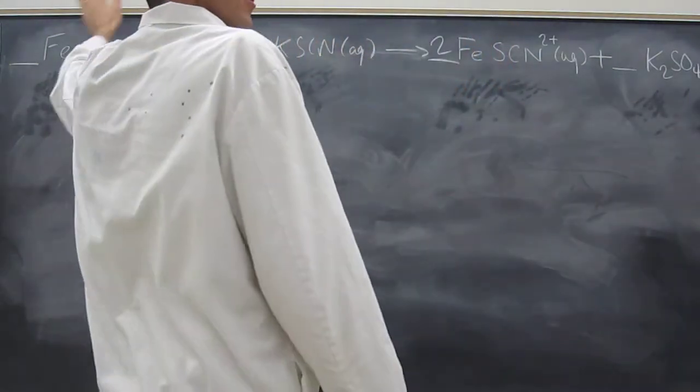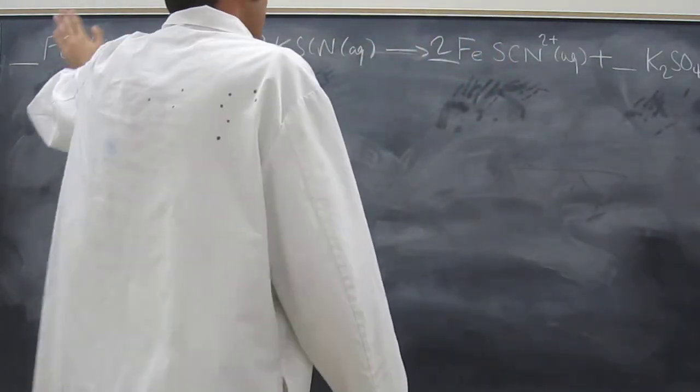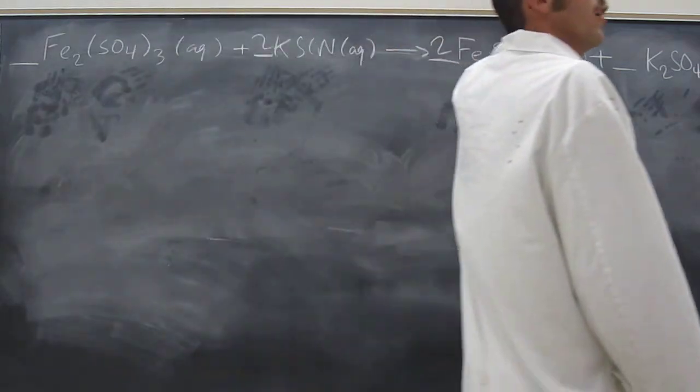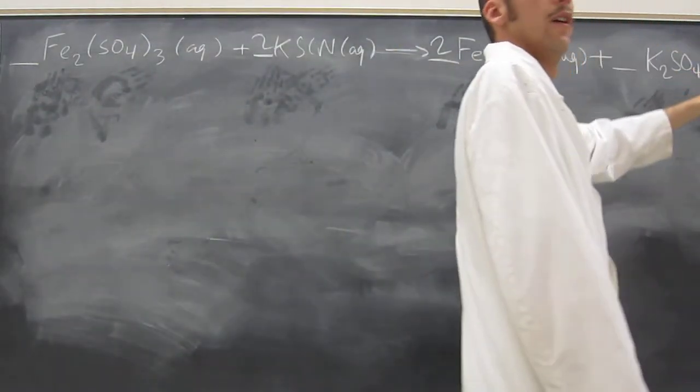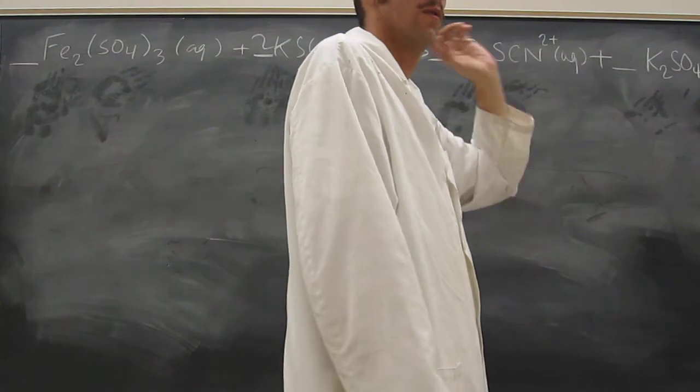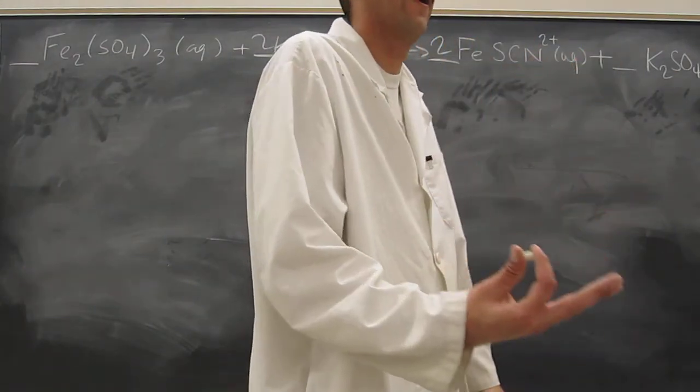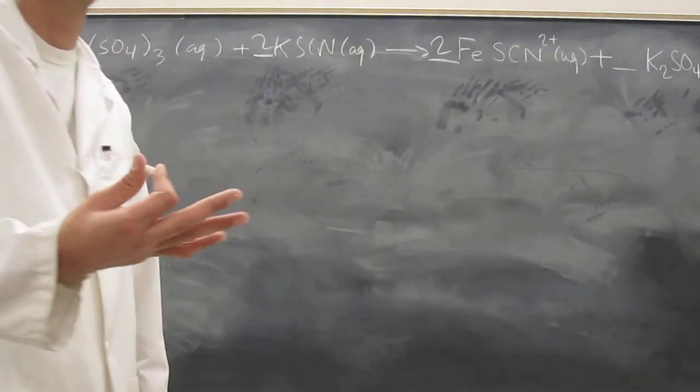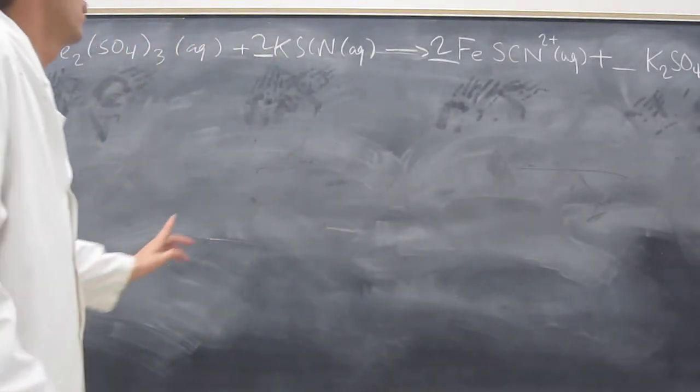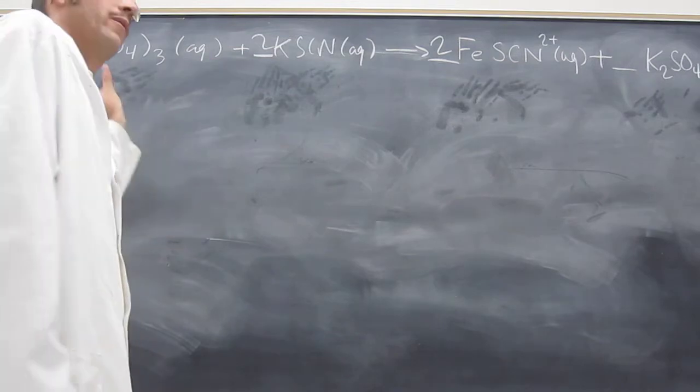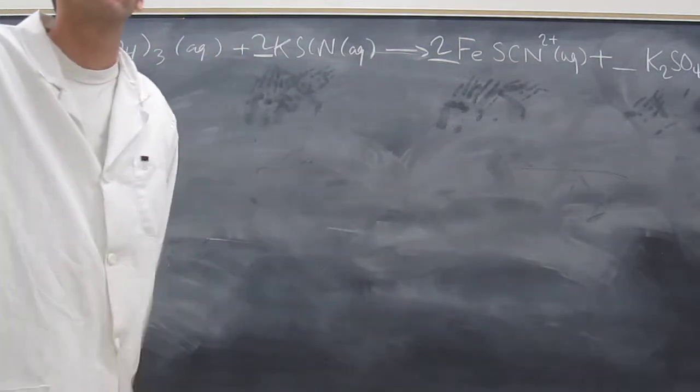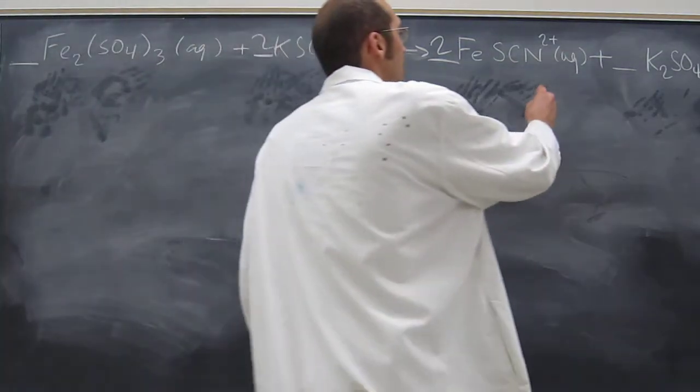But the overall charge of this is zero. The overall charge of this is what now? Two plus two, because it's two times two, so it's plus four. So what are we missing? A minus four. So what would equal minus four that we haven't put on there yet? The two sulfates. So that's what you've got to do.